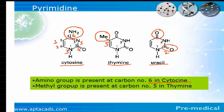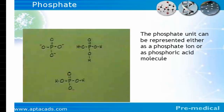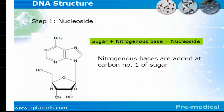In uracil, a keto group is present at two positions: carbon number two and carbon number four. The phosphate unit is present either as a phosphate ion or phosphoric acid. It is the phosphate which imparts acidic nature to DNA — the lone pair of electrons present in phosphate is the reason behind the acidic nature of DNA.